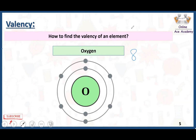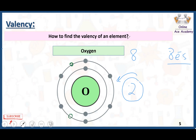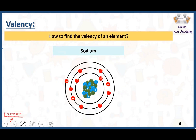The next example is oxygen. The atomic number of oxygen is 8, and there are six electrons in the outermost shell. Oxygen needs two more electrons to get stable, since eight electrons in the second shell means it is stable. Oxygen will gain two more electrons, completing its octet state. Therefore, the valency of oxygen is two.